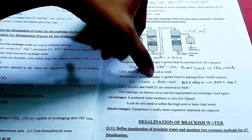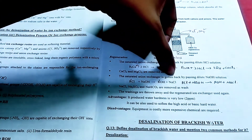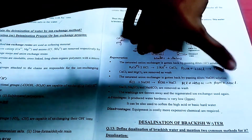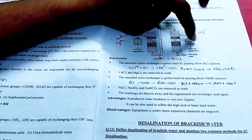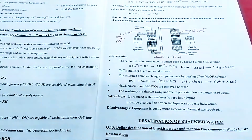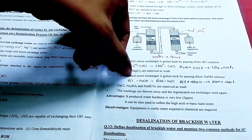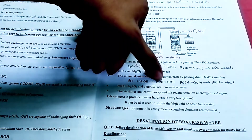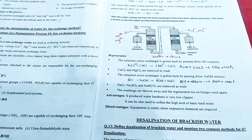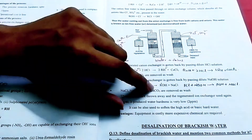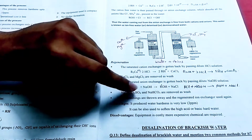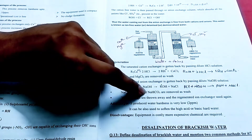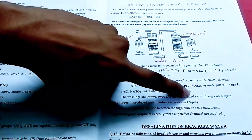The saturated anion exchanger is gotten back by passing dilute NaOH. We can pass a little bit of NaOH. The equation is: ROH + NaCl. NaCl, Na₂SO₄, and NaHCO₃ are removed as wash.